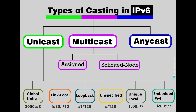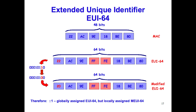A link-local IPv6 address must be assigned to every network interface on which the IPv6 protocol is enabled. A host can automatically derive its own link-local IP address or it can be manually configured. An Extended Unique Identifier (EUI) allows a host to assign itself a unique 64-bit IPv6 interface identifier, which is a key benefit over IPv4 as it eliminates the need for manual configuration or DHCP.